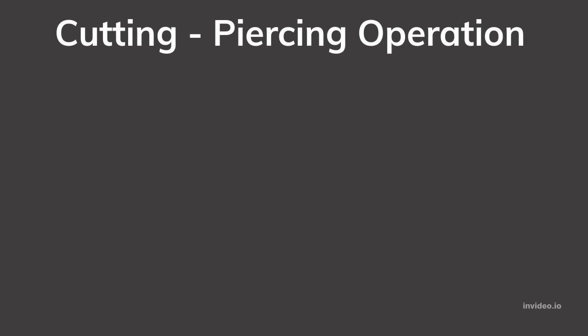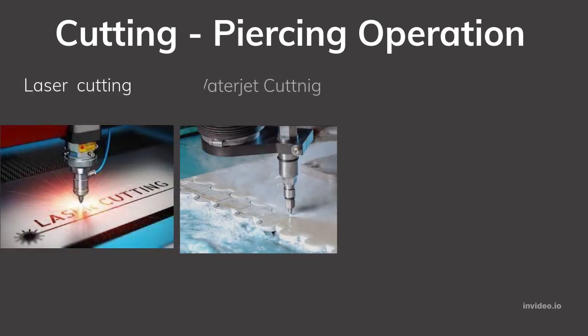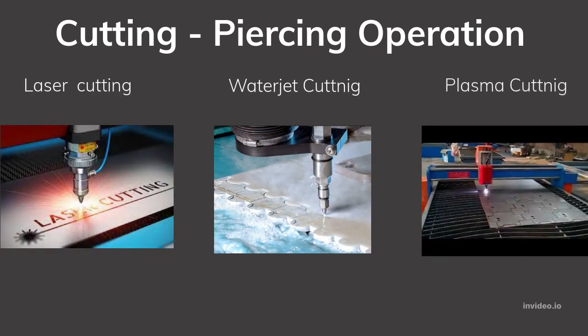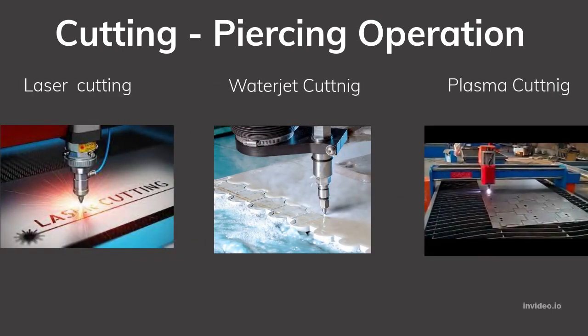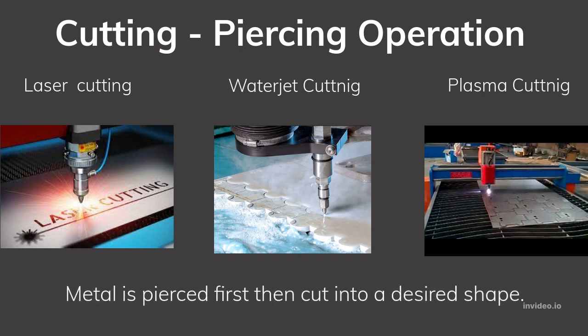Piercing operation is a very important operation and the most common used process in the industry. This method includes laser cutting, water jet cutting, and plasma cutting. In this method, metal is pierced first and then we can get the desired shape.